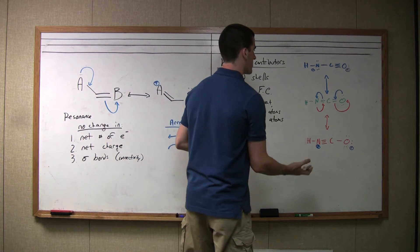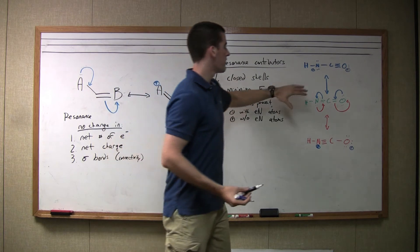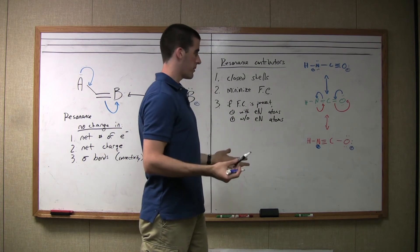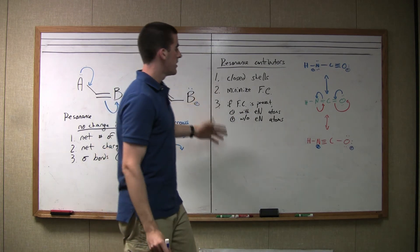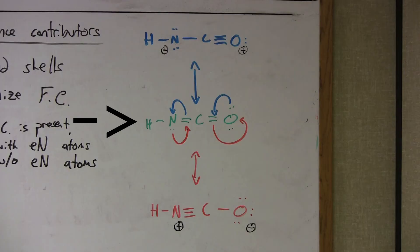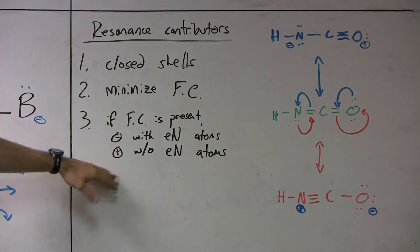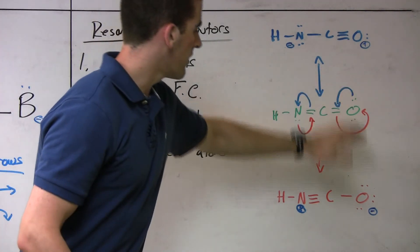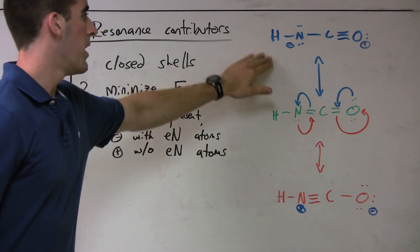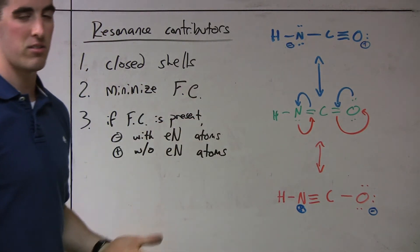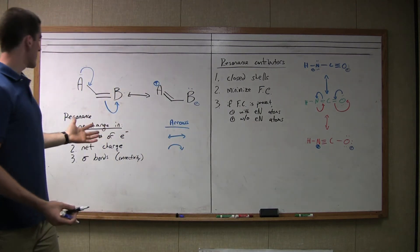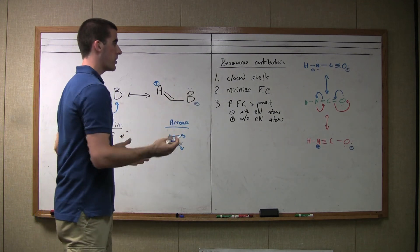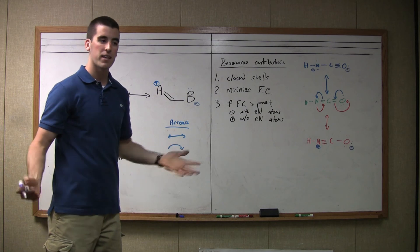Now we need to evaluate and rank these contributors. They're all closed shells — all have eight valence electrons, satisfying the octet rule. To minimize formal charge: the resonance contributor with no formal charge is obviously the best. Ranking the other two by the third rule: we want the negative charge on the most electronegative atom, which is oxygen. So the contributor with a negative charge on oxygen is better than the one with a negative on nitrogen, which is less electronegative. Those are the fundamentals of resonance — three criteria applied to rank resonance contributors based on formal charge, closed shells, and electronegativity.